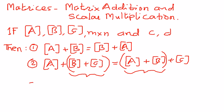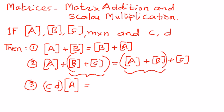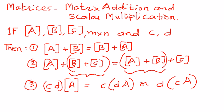The third property: if C and D are scalar quantities, and if we were to multiply them together and then multiply to matrix A, it is the same as taking one constant out and multiplying the constant D times matrix A, or equivalently multiplying D to C times matrix A. This describes how scalar multiplication associates.